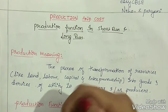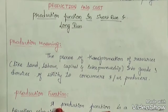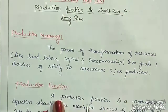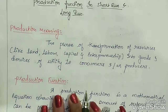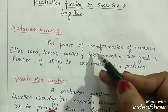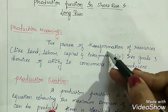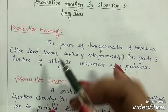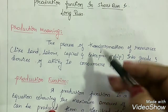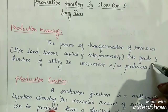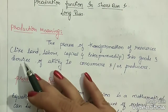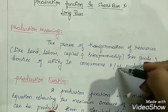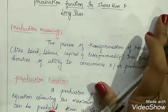Before coming to production function, it is necessary that we need to understand the meaning of production. Production is the process of transformation of resources like land, labor, capital and entrepreneurship into goods and services of utility to consumers and/or producers.